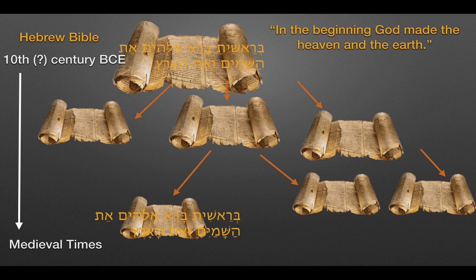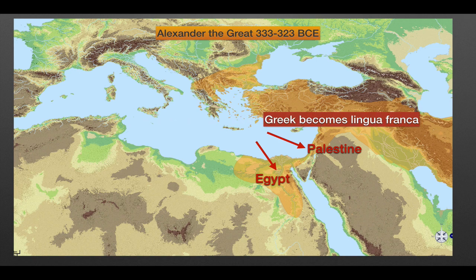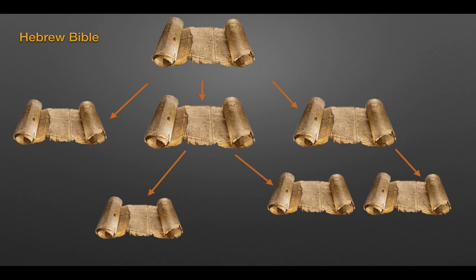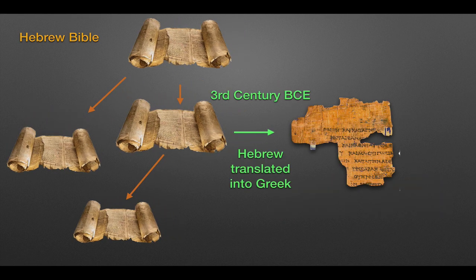Why do we get a Greek translation of the Hebrew Bible, and when? The next part of the story is Alexander the Great conquering the entire Near East — from Macedonia, eastward through Asia Minor, all the way through Iran, into India, and south through Palestine and Egypt. The important thing for our story is that Greek became the lingua franca of Alexander's empire. So Jews, even some in Palestine, began to use Greek. And in Egypt, where there was a large Jewish population, Jews spoke almost entirely Greek. That means that while Hebrew Bibles were being copied, in the 3rd century the Hebrew was translated into Greek.